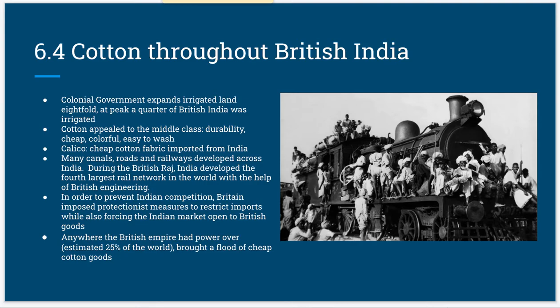The British were competing with Indian markets for the sale of cotton. The value of the British Empire was enormous, and in order to maintain the edge on their competitors, the country invested in technology that would save time and allow for massive-scale production. The British also developed many canals, roads, and railways across India. During the time of the British Raj, India developed the fourth largest rail network on the planet with the help of British engineering.